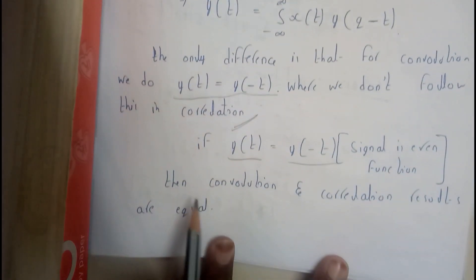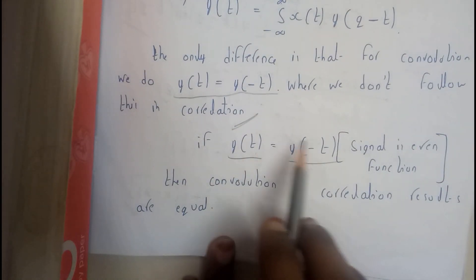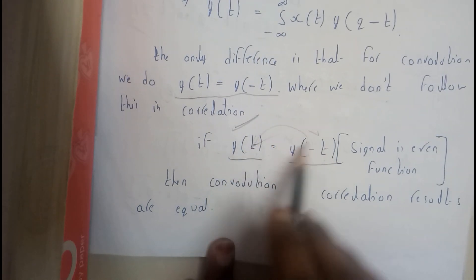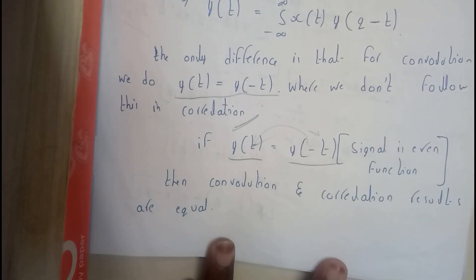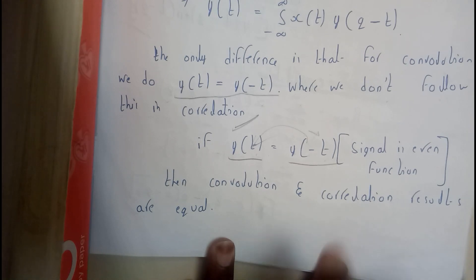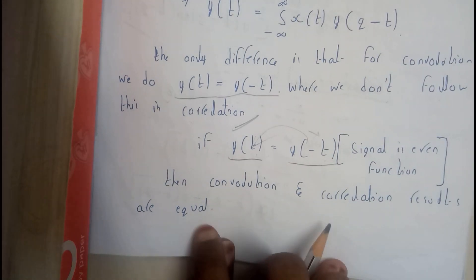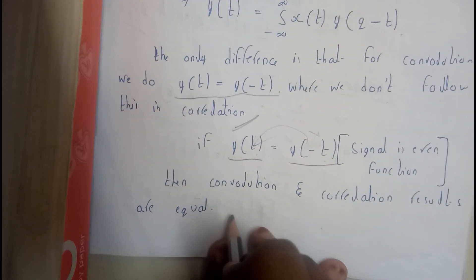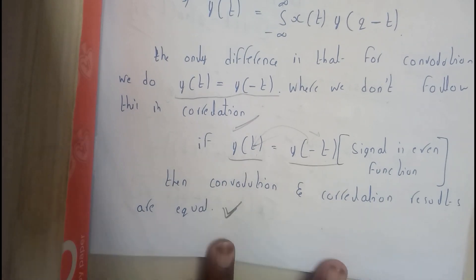That's what I have just written here. Then, if y of t is equal to y of minus t, that is nothing but if these both are equal, that indicates that the signal is even signal or even function. Then the correlation result will be absolutely same.